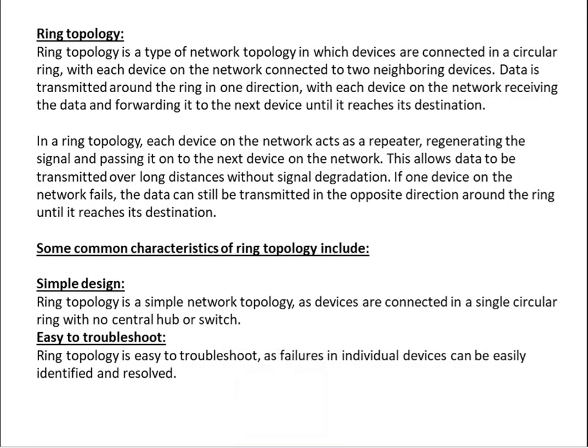Ring topology is a type of network topology in which devices are connected in a circular ring, with each device on the network connected to two neighboring devices. Data is transmitted around the ring in one direction, with each device receiving the data and forwarding it to the next device until it reaches its destination.